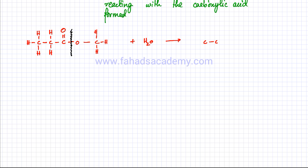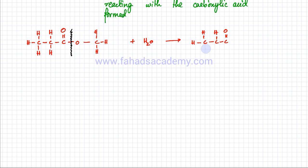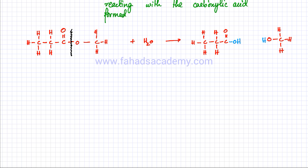The molecule splits into two parts: one side has the double bond O with three carbon atoms — the propanoate side — and the other side has a single bond O and a CH3 group. Water is added across the split: an OH is added to the carboxylic acid side and an H is added to the other side. This H and OH come from the water molecule, which is exactly the reverse of how an ester was formed.